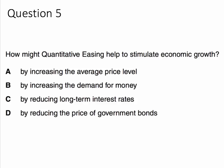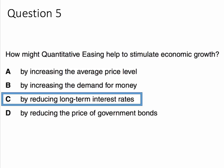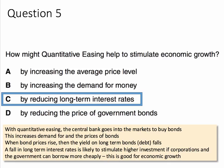The answer to question five is C, by reducing long-term interest rates — that's the main answer. With QE, the central bank goes into the markets to buy bonds. That increases the demand for and the prices of bonds — corporate bonds, government bonds. When bond prices rise, the yield, or the interest rate on the bonds, falls. A fall in long-term interest rates is likely to stimulate higher investment, particularly if businesses and government can borrow more cheaply. And a rise in investment is ordinarily good, particularly for long-term economic growth.